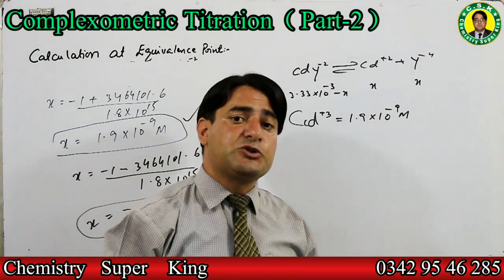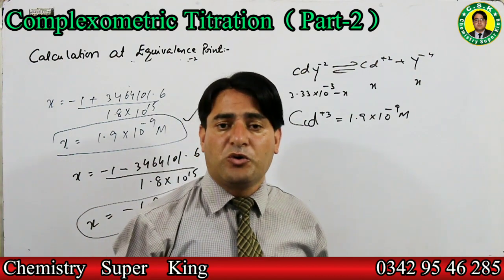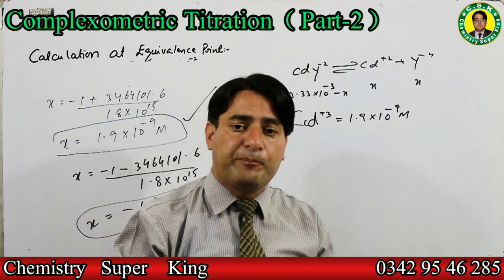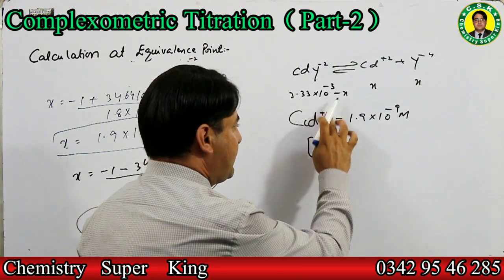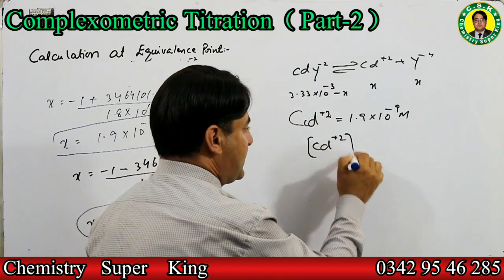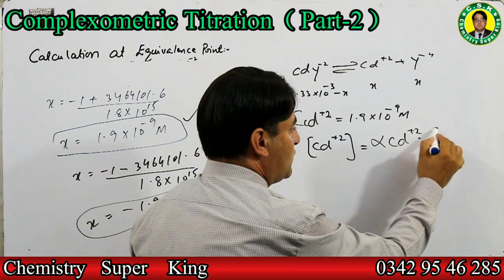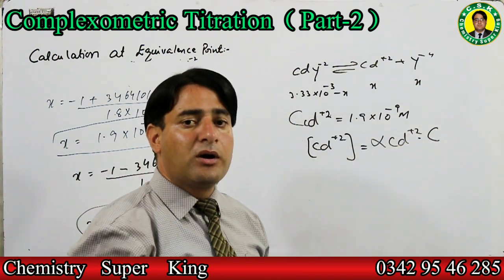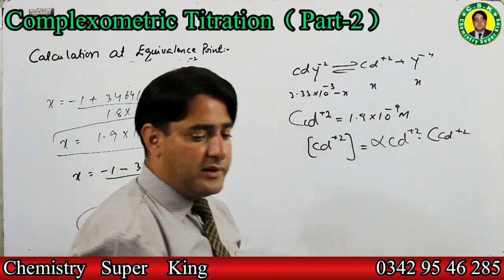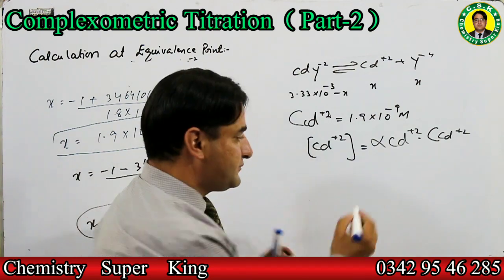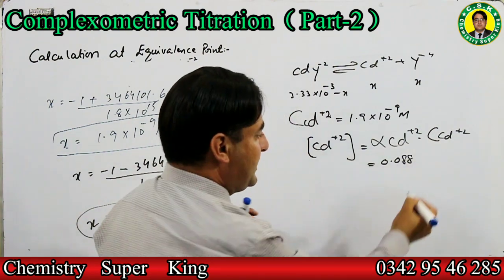یہ جو cadmium ion complex کی dissociation سے بنے، یہ سارے کی ساری free نہیں ہوگی۔ کچھ cadmium ion ammonia سے مل کر complex بنا سکتی ہے۔ Free cadmium ion concentration = alpha of cadmium ion × total cadmium ion concentration from CdY²⁻ dissociation۔ Alpha of cadmium ion کی value ہے 0.0088 (point zero zero eight eight)۔